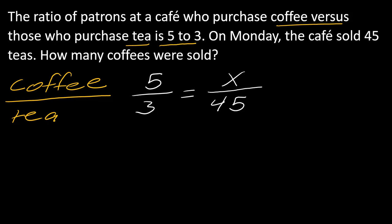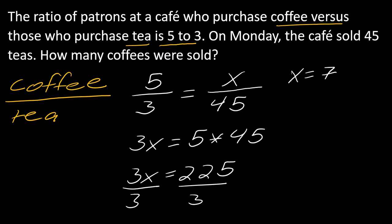I can do it the same way. I've got 3X equals 5 times 45, so 3X equals 225. Then I divide both sides by 3, and I get X equals 75. 75 what? Remember, we're solving here and it's talking about coffees. So there's our answer: 75 coffees.